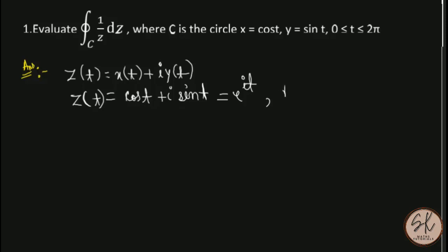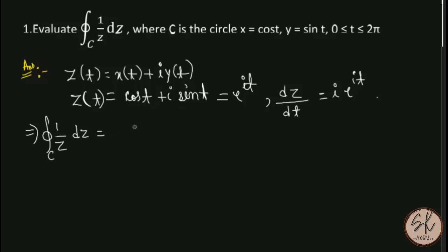Now we can easily find dz by differentiating: dz/dt = i·e^(it), so dz = i·e^(it) dt. We have to find the integral of 1/z along C, which equals the integration from t = 0 to 2π of (1/e^(it)) · i·e^(it) dt.